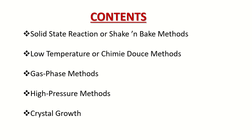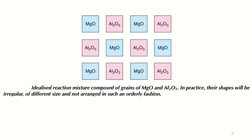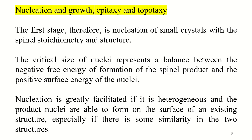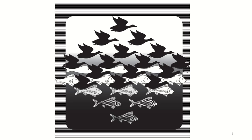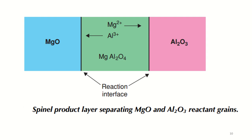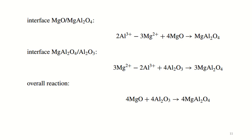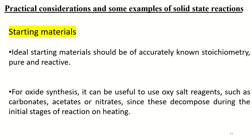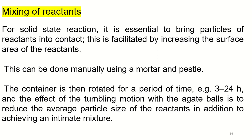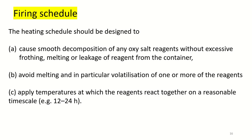In previous lectures we have already discussed the solid state reactions or shake and bake methods. In this method we discussed details including the manufacturing of magnesium oxide and aluminium oxide materials, along with different strategies to prepare product layers of different compounds. We also studied practical considerations including starting materials, mixing of reactants, and container firing schedule.